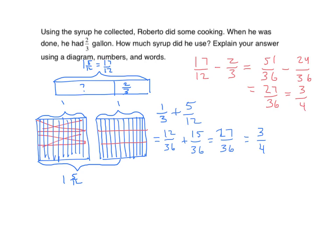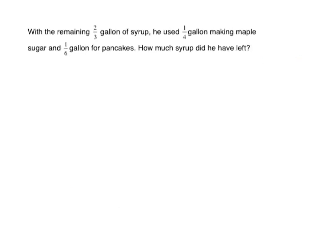We got through the first half, and now we'll go on to the second half. With the remaining two-thirds gallon of syrup, he used one-fourth of a gallon making maple sugar and one-sixth of a gallon for pancakes. How much syrup did he have left? We can visualize the whole using our tape diagram — the whole in this case is two-thirds. We put in one-fourth for maple sugar, one-sixth for pancakes, and the rest — the question mark — is what's left.